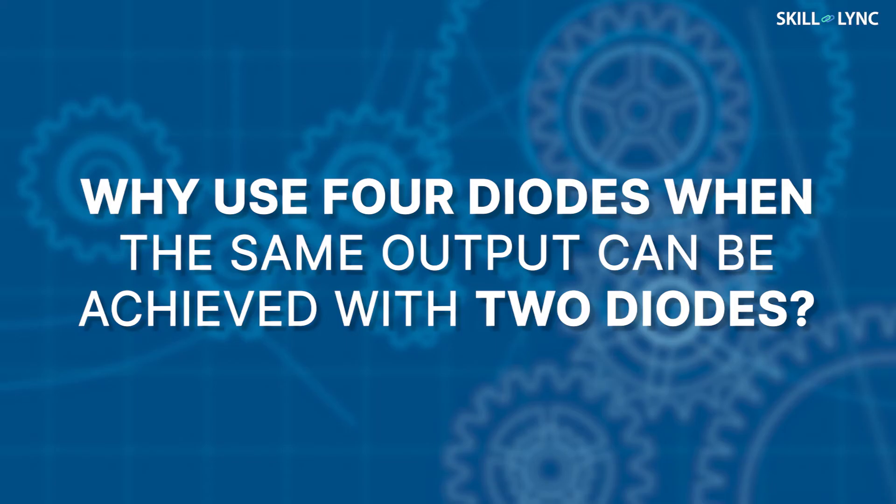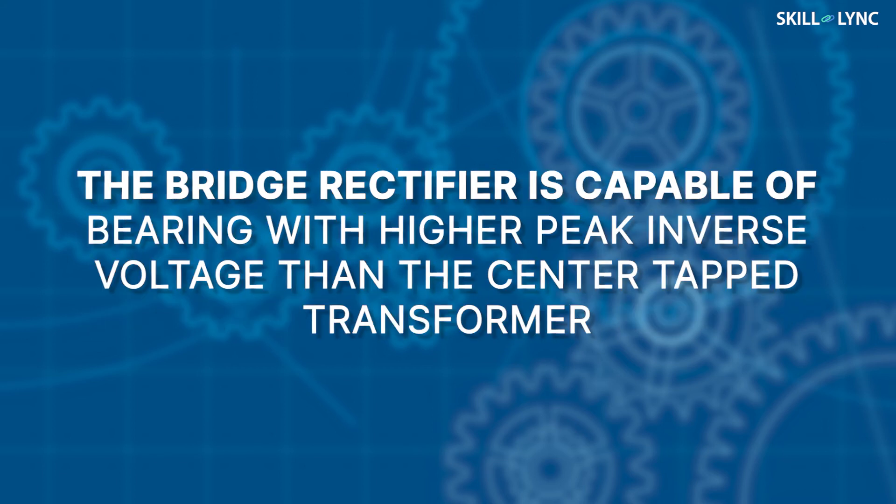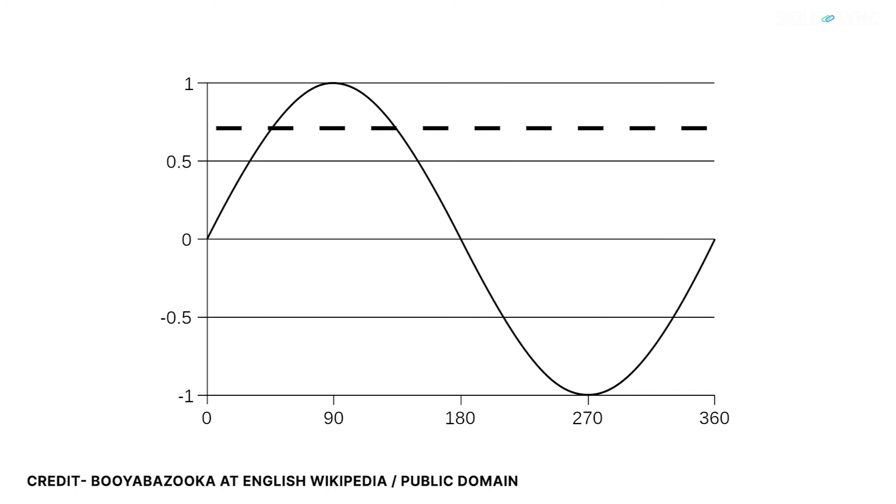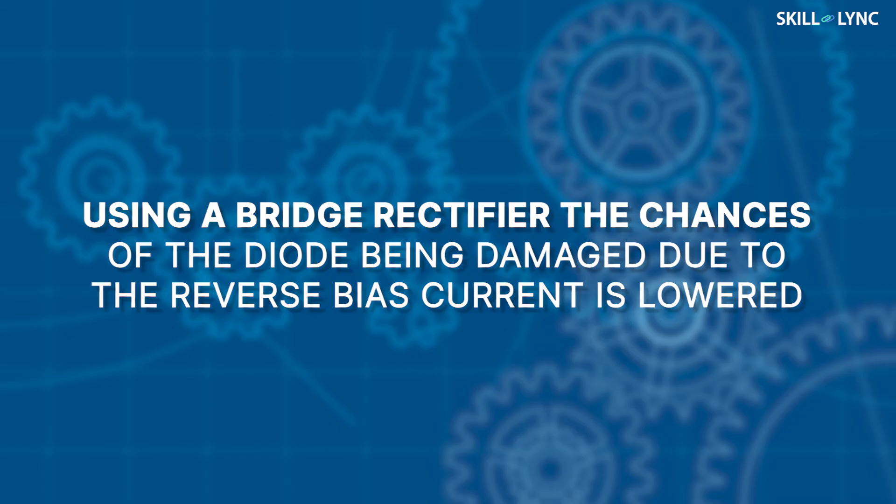Now, you may wonder why we use four diodes when the same output can be achieved with two diodes. Well, that is because the bridge rectifier is capable of bearing with higher peak inverse voltage than the center-tapped transformer. Peak inverse voltage is the highest negative voltage that a rectifier needs to block. Using a bridge rectifier, the chances of the diode being damaged due to the reverse-biased current is lowered.